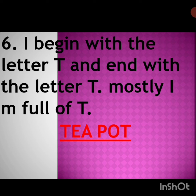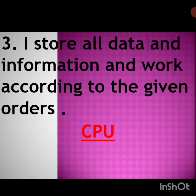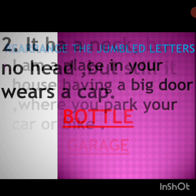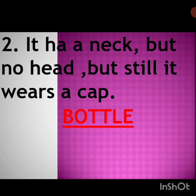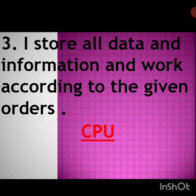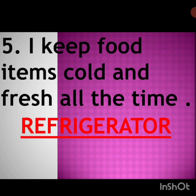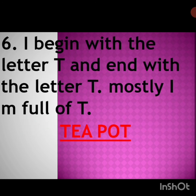Let's see once again. First: I am a place in your house having a big door where you park your car or bike — garage. Second: It has a neck but no head but still it wears a cap — bottle. Third: I store all data and information and work according to the given orders — CPU. Fourth: I am a rectangular box in which you keep pencil, eraser, scale and colors — pencil box. Fifth: I keep food items cold and fresh all the time — refrigerator. Sixth: I begin with the letter T and end with the letter T, mostly I am full of T — teapot.